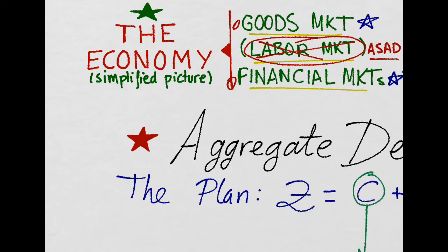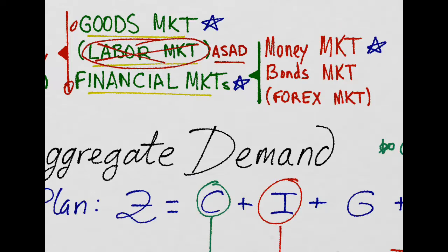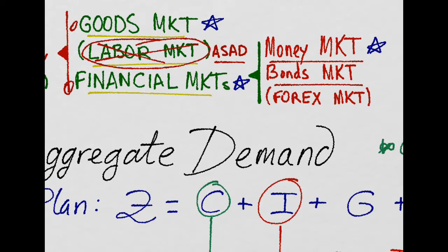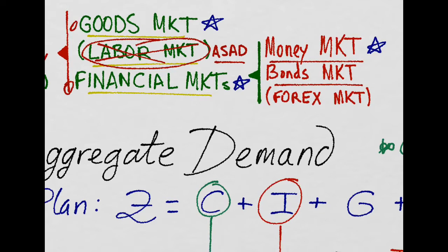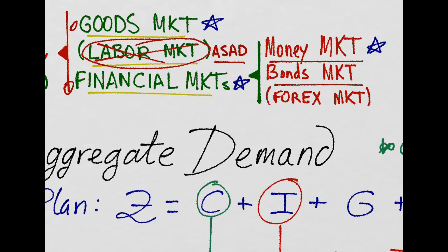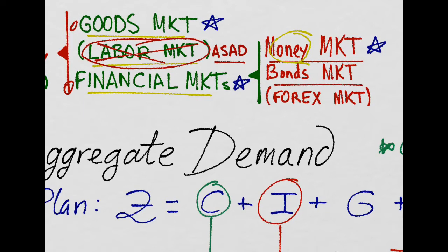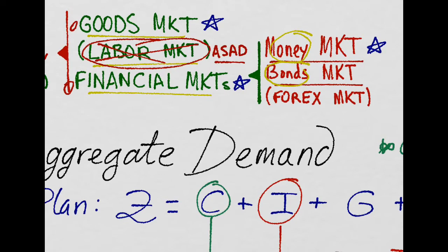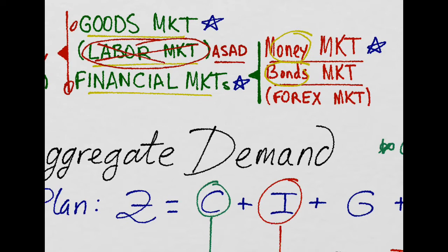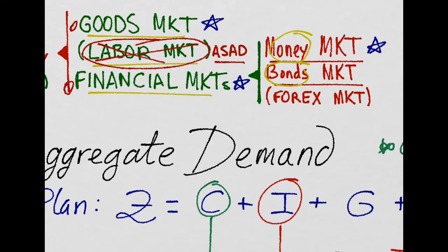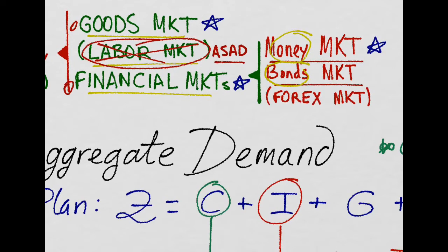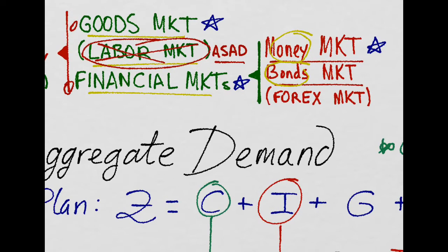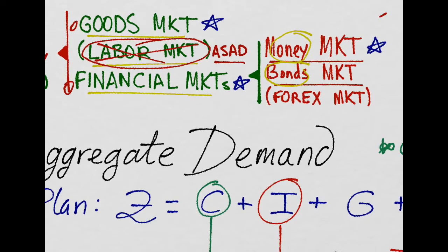So we have the goods market and the financial markets. These financial markets are composed of the money market and the bonds market. For simplification purposes, we assume there are only two assets in the economy: money and bonds. But the money market and the bonds market are two sides of the same coin. So when using the IS-LM, we only need to use one, which is going to be the money market.